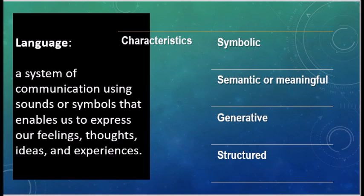Language has four characteristics. It is symbolic — words can represent objects, such as when you think or speak about a glass, you can also realize it. It is semantic, meaning it has meanings. It is generative — very few symbols can be combined together to create several other expressions and messages. And it is structured — it has rules.